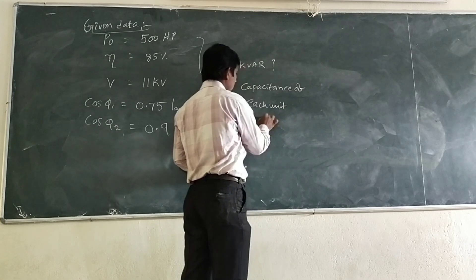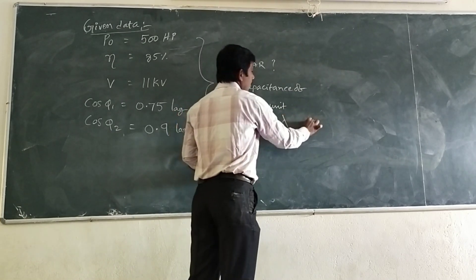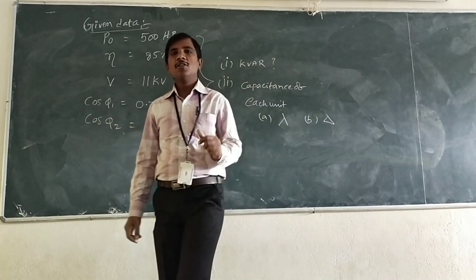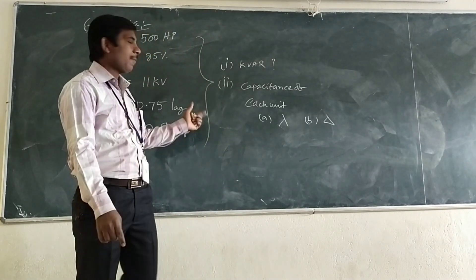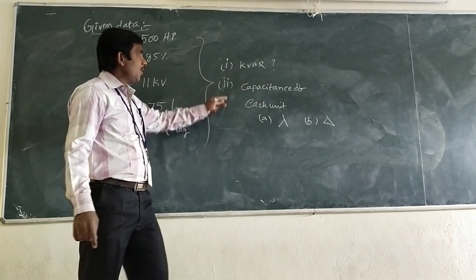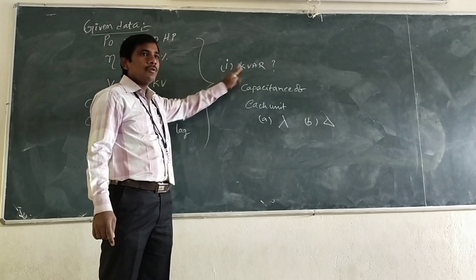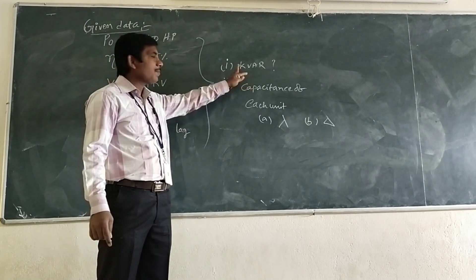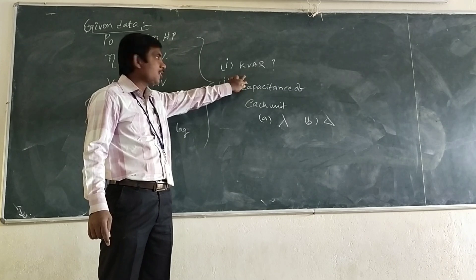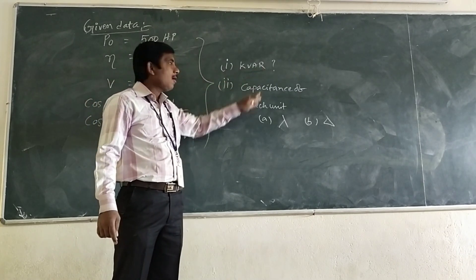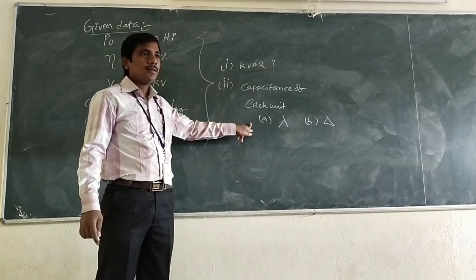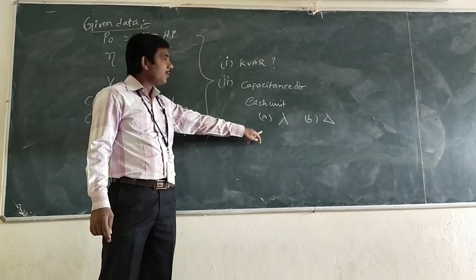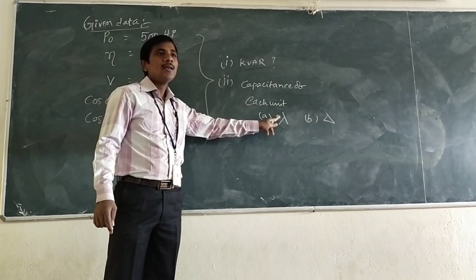When the capacitors are connected in star as well as delta, what is the rating of the capacitor bank required? First, we have to calculate the capacitor rating to improve the power factor using P × (tanφ₁ − tanφ₂). We also need to calculate the capacitance of each unit in microfarads, for both star and delta connections.